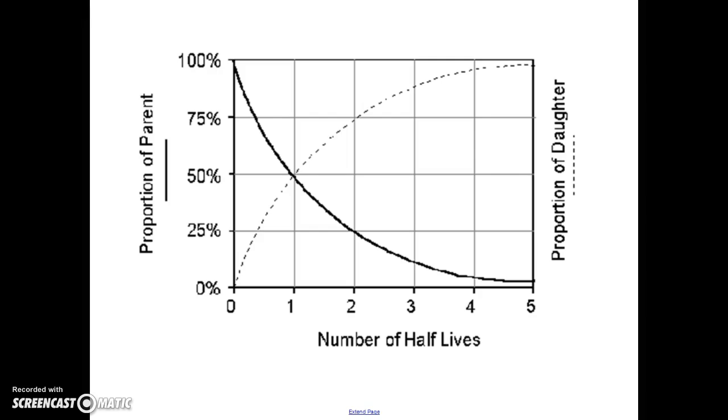When you graph this, your graph will always look like this. It doesn't matter which of the isotopes we're talking about. So at your zero half-life mark, you're always going to have 100% of the parent. After your first half-life, you will have 50% of the parent and 50% of the daughter. At your second half-life, you lost half of the parent, so the 50 drops down to 25. At your third half-life, we lose half of the 25, we drop down to 12.5, and so on and so forth.